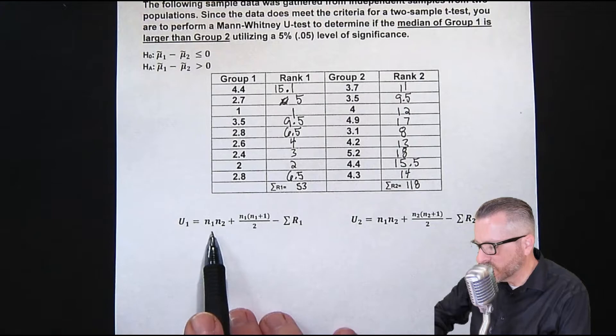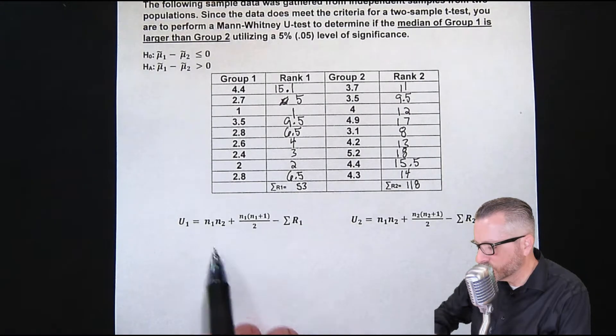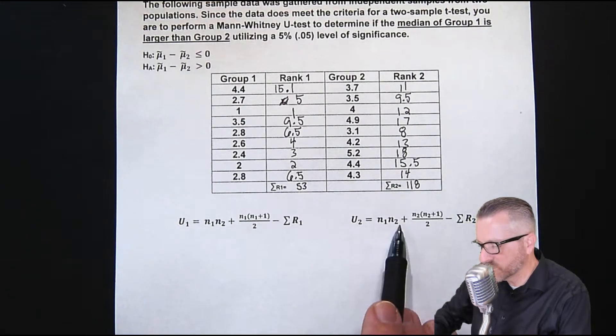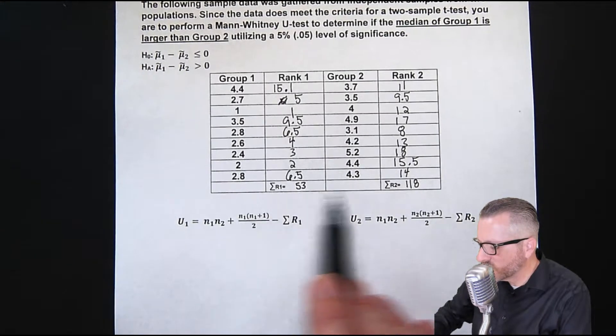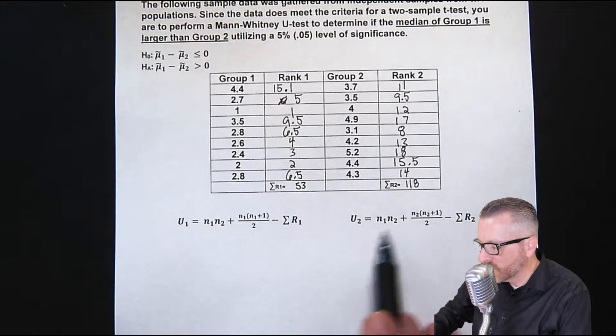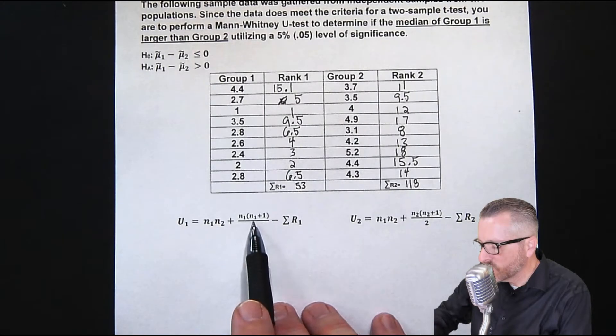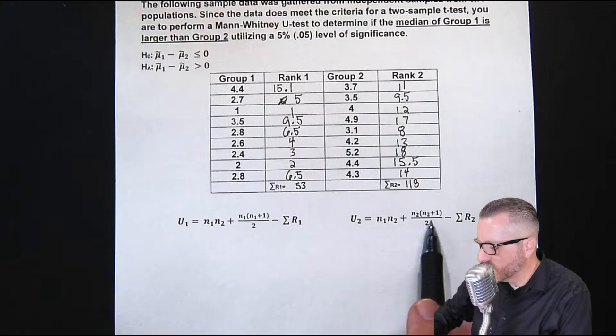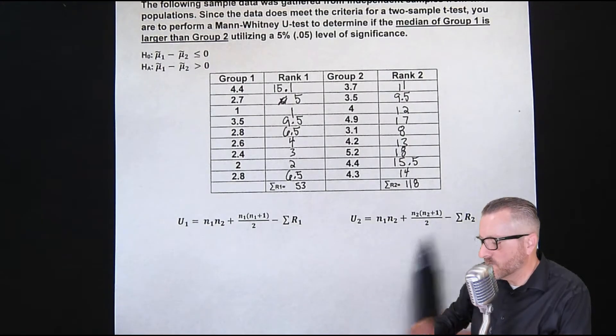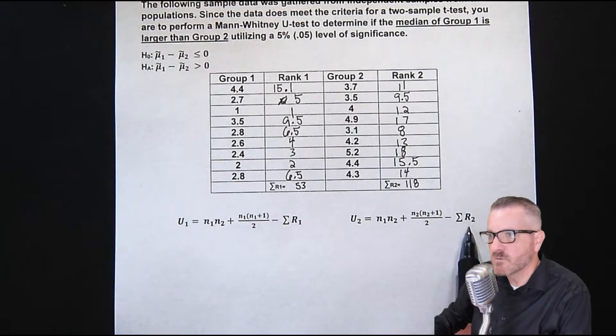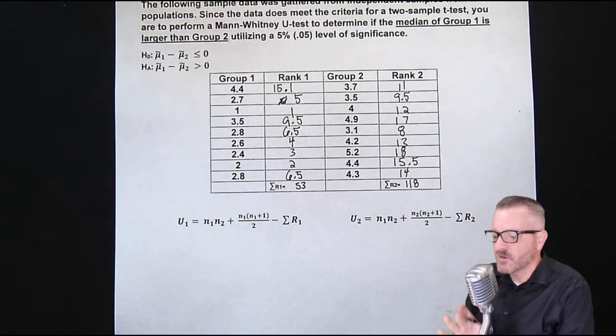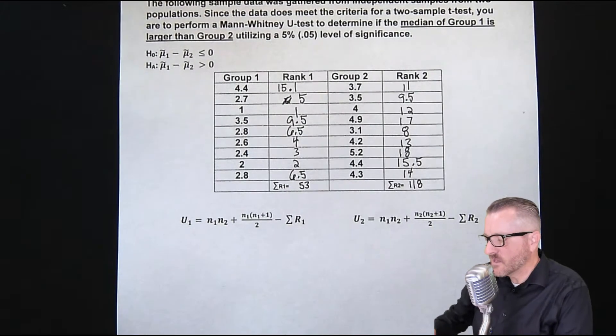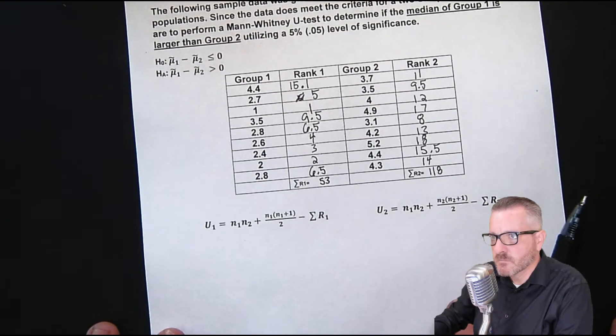Now take a look at these. They're very similar. It says n1 and n2, n1 and n2, those are both the same. Two, two, both the same. n1, and then this one is n2. This is the n2 side. And then n1 plus one, the U one. And then on this side, the n2 plus one. And then on this one, when we do the subtract the sum of the ranks, this one's the R two rank. This one's the R one rank. So they are different, but they're very similar.